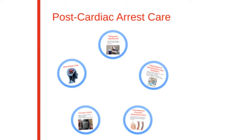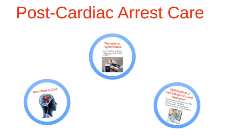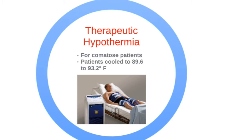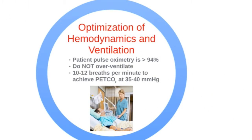Integrated post-cardiac arrest care is the last link in the chain of survival. Therapeutic hypothermia is recommended for comatose patients with ROSC after a cardiac arrest event, and should be cooled to an appropriate temperature. During optimization of hemodynamics and ventilation, 100% oxygen is acceptable for early intervention, but not for an extended period of time.